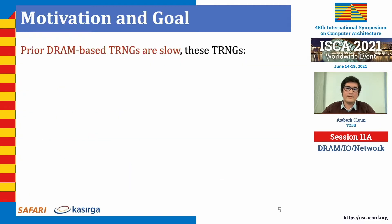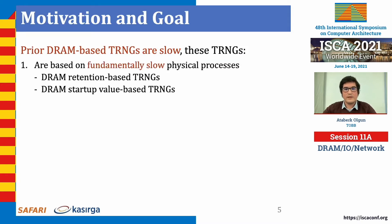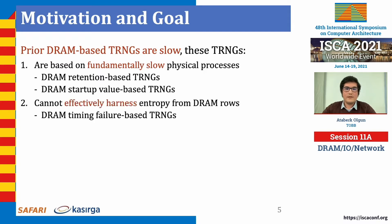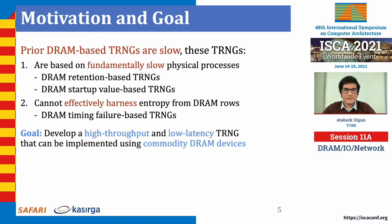The problem with existing DRAM-based TRNGs is that they are slow. A subset sample fundamentally slow physical processes such as DRAM charge leakage, while others cannot effectively harness the available entropy from DRAM rows. Our goal is to develop a high-throughput and low-latency TRNG that can be implemented using commodity DRAM devices and requires no additional specialized hardware.